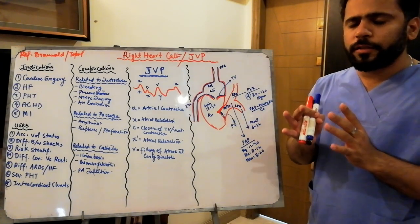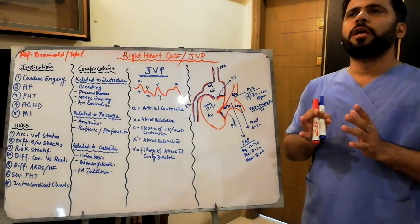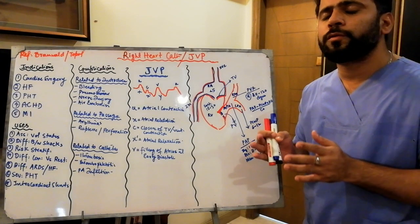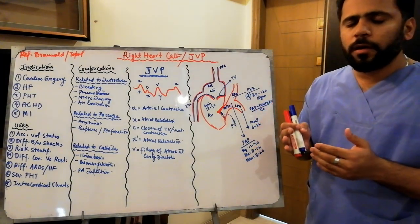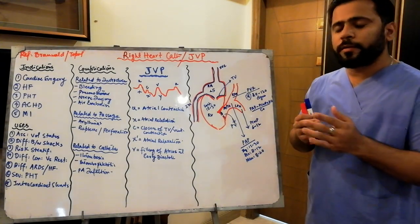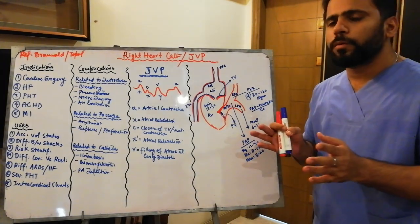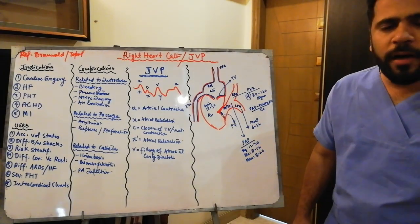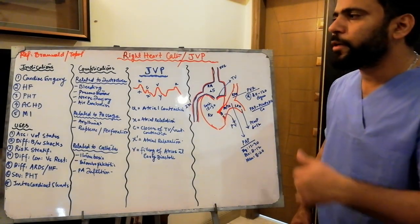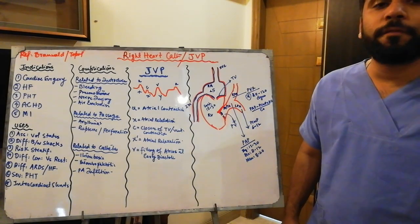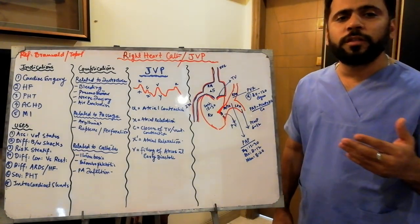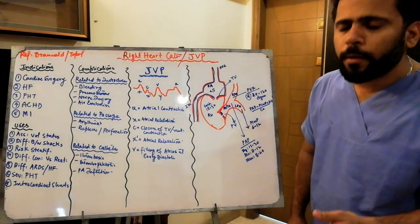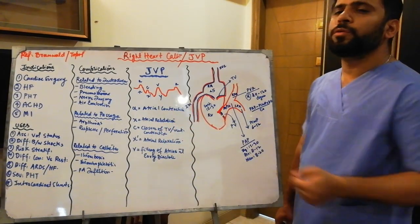For heart failure, there was the ESCAPE trial, which observed two arms: one with invasive monitoring using a pulmonary artery catheter, and one without. The ESCAPE trial showed there is no mortality benefit from invasive monitoring in heart failure. So it is not indicated for every heart failure patient. However, if your patient has diastolic dysfunction and you are confused whether it is restrictive cardiomyopathy or something else, then you need to do the right heart cath.